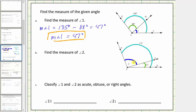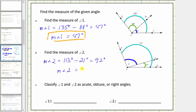From the diagram, notice the measure of angle two plus 21 degrees must equal 113 degrees, and therefore the measure of angle two must equal 113 degrees minus 21 degrees — the large angle minus the small angle — which leaves us with the measure of angle two. 113 degrees minus 21 degrees equals 92 degrees. The measure of angle two equals 92 degrees.